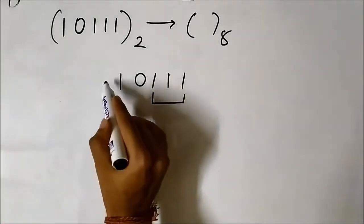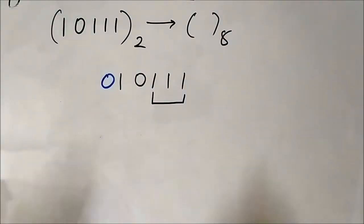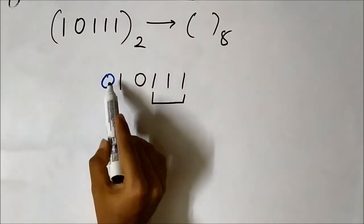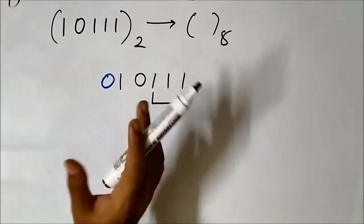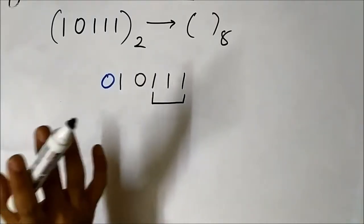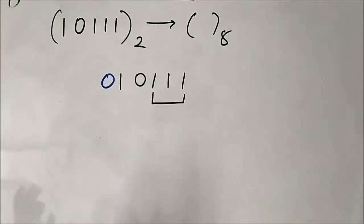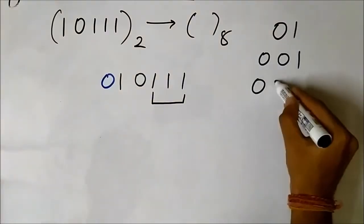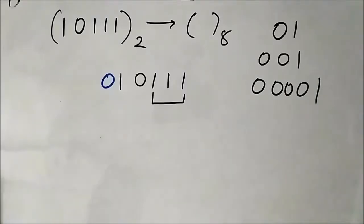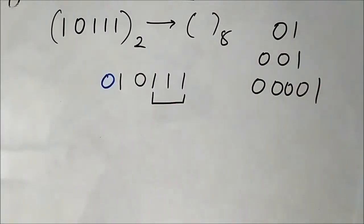What we can do is deliberately add a 0 on the MSB side. This causes no change in the value. Always remember: if we add zeros to the MSB of a binary number, there is no change in the value. You can add an infinite number of zeros and the value will remain the same — for example, 1, 01, and 001 are all equal to 1.